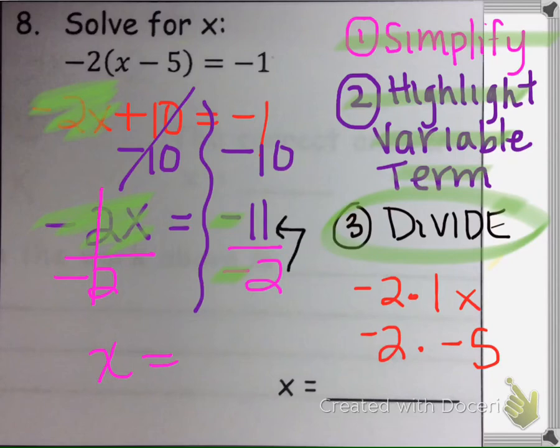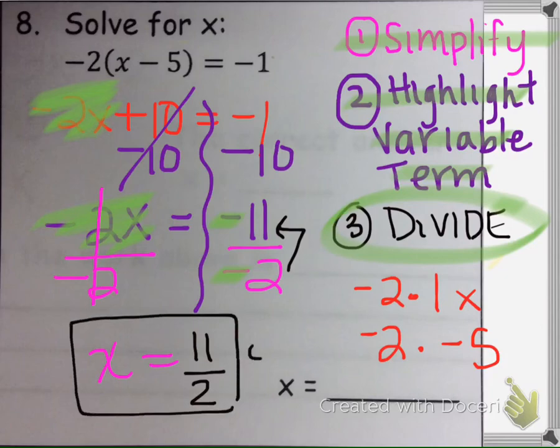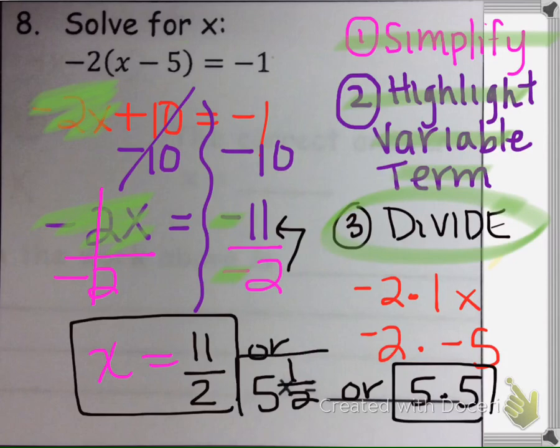2 can't go into 11 evenly, so we're going to leave it as a simplified fraction. We can write our answer as 11 halves. We could also write our answer as 5 and a half, or we can write our answer as 5.5. All three of those answers would be great.